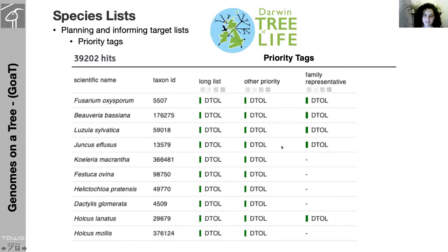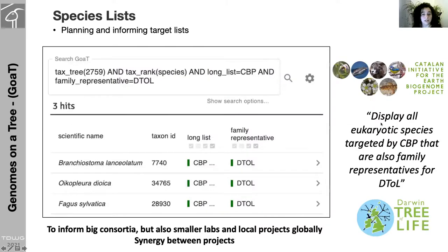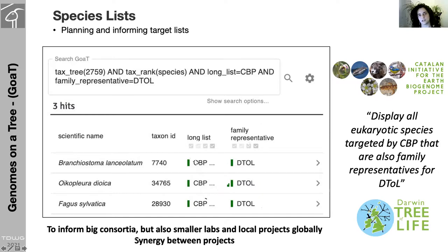GOAT was also designed to collate updates on target species and priority lists alongside sequencing status so that different projects can plan and inform their sequencing strategies accordingly. It is possible to create and download lists per project, such as for the Darwin Tree of Life, showing target species and current priorities. Visualization of overlap between projects is also possible — for instance, identifying species targeted by the Catalan Biogenome Project that also have family representatives within Darwin Tree of Life. Queries like this will be very important to inform big consortia, smaller labs, and local projects globally, ensuring synergy between projects across the globe.